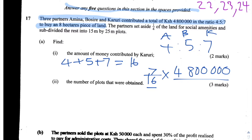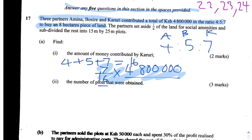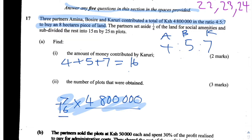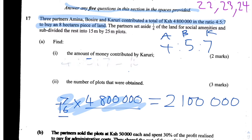You can do long division to work out the answer, but since it's a calculator paper, just put this into your calculator. So 7 divided by 16 is 0.4375 as a decimal, and multiplying that by 4,800,000 gives us the answer. So the answer we get is 2,100,000 shillings — that is the amount contributed by Karuri.